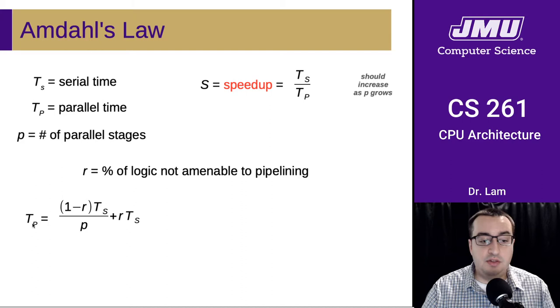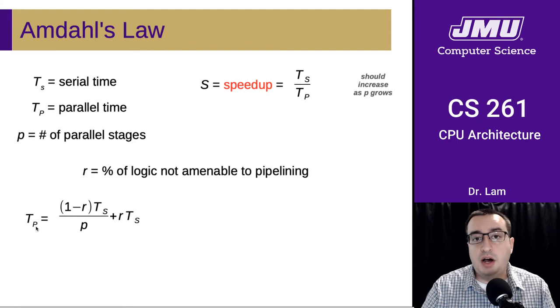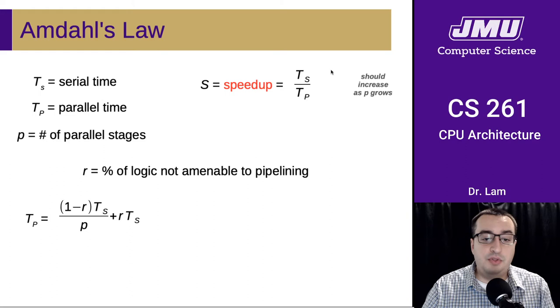But essentially, this is an equation for the parallel time that models the parallel time based on R. So this is the amount of the program that can be parallelized. This is the amount of the program that can't be parallelized.